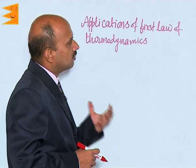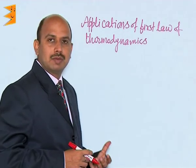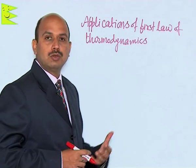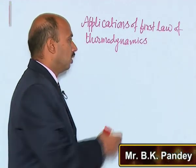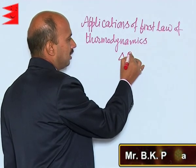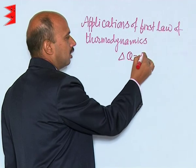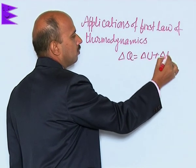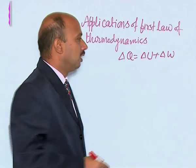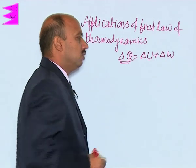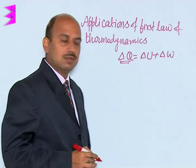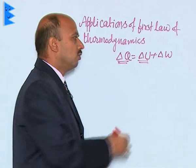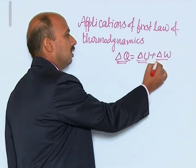Now, let's see applications of the first law of thermodynamics, using everything we have studied till now. The first law of thermodynamics states delta Q is equal to delta U plus delta W. When heat delta Q is given to the system, it is used in two parts: one is to increase the internal energy by delta U, and the other is doing work, that is delta W.